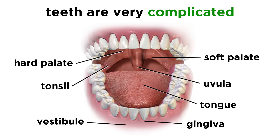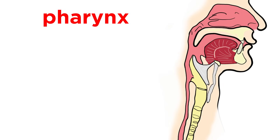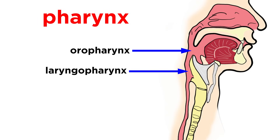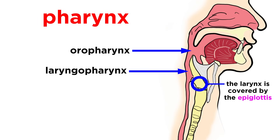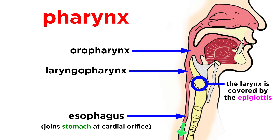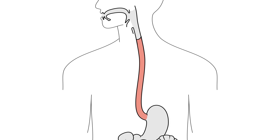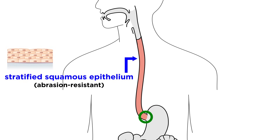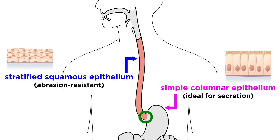The growth and development of teeth requires its own tutorial, so for now let's continue down to the pharynx. Food will move through the oropharynx and laryngopharynx, just like air does when we breathe. But with the larynx covered by the epiglottis, the food will then move into the esophagus. This is a muscular tube that joins the stomach at the cardial orifice within the abdominal cavity. The esophagus wall has the basic structure that we described earlier, although at this junction with the stomach, stratified squamous epithelium, that is abrasion resistant, will change into simple columnar epithelium, which is ideal for secretion.